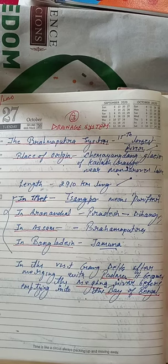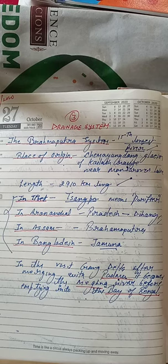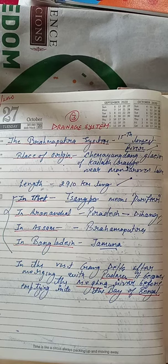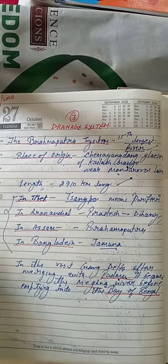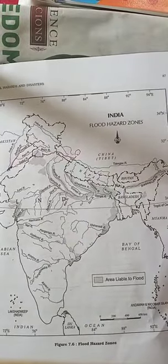The river then emerges from the foothills under the name Siang or Dihang in Arunachal Pradesh. Near the town of Sadiya in Arunachal Pradesh, it starts flowing toward the southwest and receives its main left bank tributaries — Dihang and Lohit. Thereafter, the Brahmaputra receives a large number of tributaries across its vast floodplains of Assam.